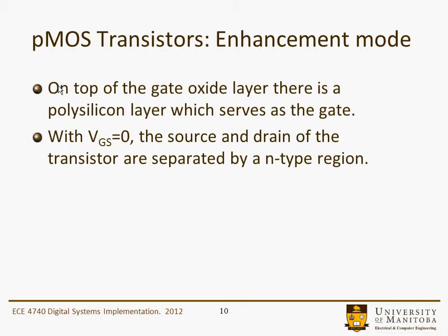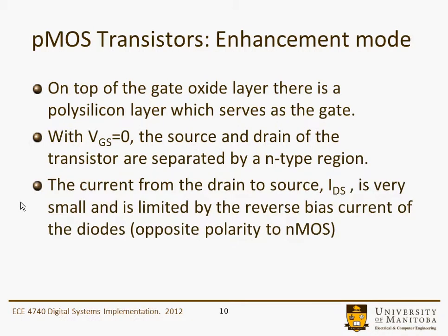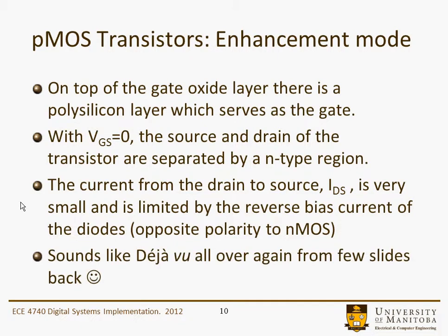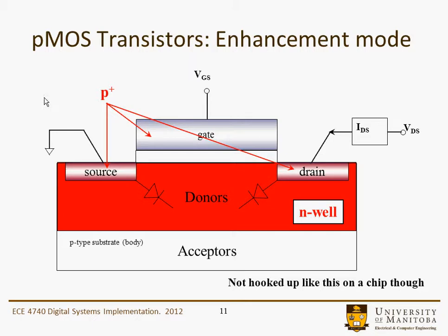Between the source and the drain there's a channel, and there's an insulating layer between the channel and the gate — the gate oxide or gate dielectric. On top of the gate oxide layer there is a polysilicon layer, a polysilicided layer, or even a metal gate which serves as the gate terminal. When VGS is equal to zero, the source and drain are separated by an N-type region, so IDS is very small, limited by the reverse bias current of one of the diodes. Here the source is tied to ground, VGS would be negative, and VDS would be negative when making measurements on this device.